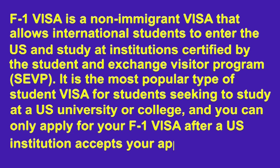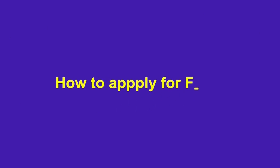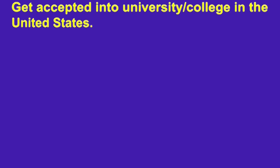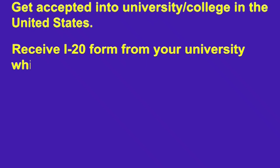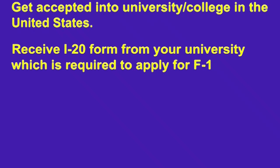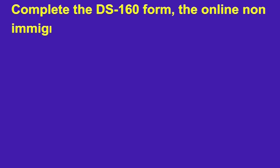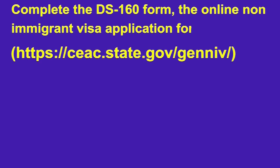To apply for an F1 visa: first, get accepted into a university or college in the United States. Then, receive the I-20 form from your university, which is required to apply for the F1 visa. Next, complete the DS-160 form — the online non-immigrant visa application form.